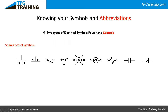In controls, we have lots of different symbols. A normally open push button (abbreviation NO) is a momentary switch — when you push it and let go, it opens again. Think of a green start button for a motor. A normally closed push button (NC) is also momentary — this would be the stop button on a motor, or an emergency stop button, which typically has a mushroom-type head.